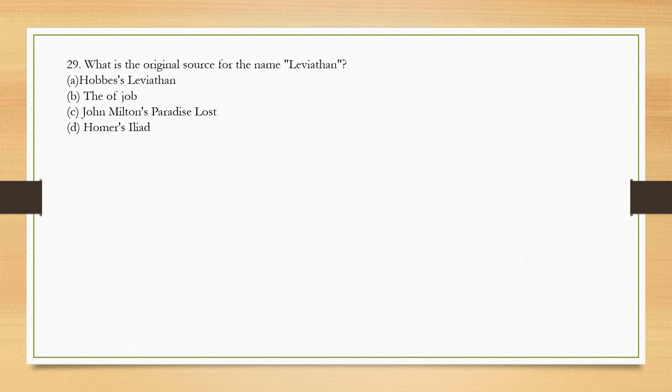What is the original source for the name 'Leviathan'? Leviathan is the major work of Hobbes and a very important topic. Options: the Book of Job; John Milton's Paradise Lost; Homer's Iliad. The answer is: the Book of Job.